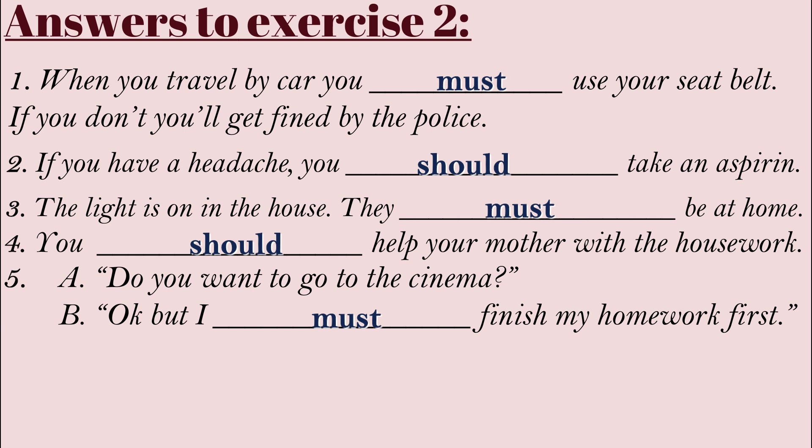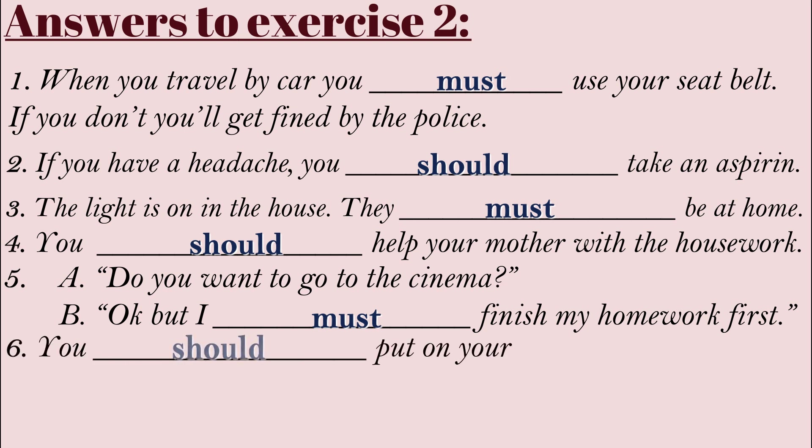Number six: 'You should put on your coat — it's cold outside.' Here it's not strong; we use 'should' and not 'must' because there are other possibilities — maybe you want to put on a pullover or a jacket, not necessarily a coat. You have the choice, and when there is a choice we use 'should,' not 'must.'